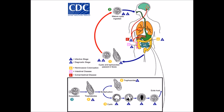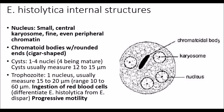This is the life cycle for Entamoeba histolytica. Other than the fact that it has parts for extraintestinal disease, this life cycle is the same for all the amoeba we'll be talking about today. Looking at the internal structures of Entamoeba histolytica: the nucleus has a small central karyosome and fine, even peripheral chromatin. Chromatoid bodies have rounded ends and are frequently called cigar-shaped. Cysts will have between 1 and 4 nuclei, with a mature cyst having 4, usually measuring about 12 to 15 microns. The trophozoite has only 1 nucleus, usually measuring about 15 to 20 microns, but can have a much wider range. Ingestion of red blood cells can be used to differentiate E. histolytica from E. dispar.